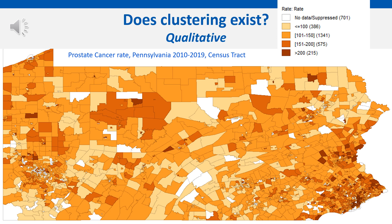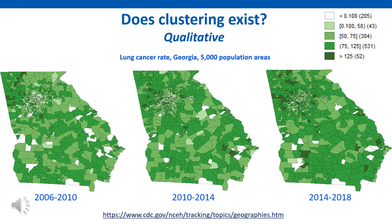This choropleth map was created using GeoDa. Age-adjusted prostate cancer rates by census tract in Pennsylvania were categorized using manual breaks, with the higher rates being displayed in darker colors. This choropleth map shows lung cancer rates in Georgia by the 5,000 population areas that the CDC Environmental Public Health Tracking Program created to increase population counts within small geographies. If interested in learning more about that, the link is provided below.